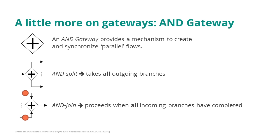Once we have a token in each of the incoming branches, then we can proceed by synchronising these two tokens, meaning that we merge them back into a single token that we send to the output branch of the AND join.